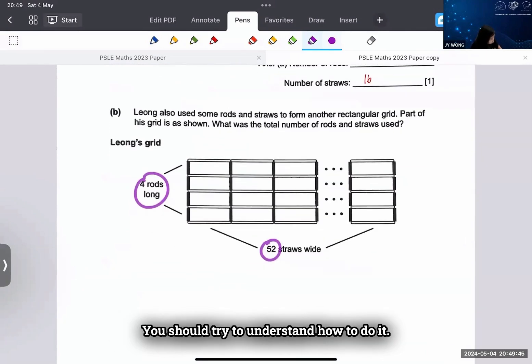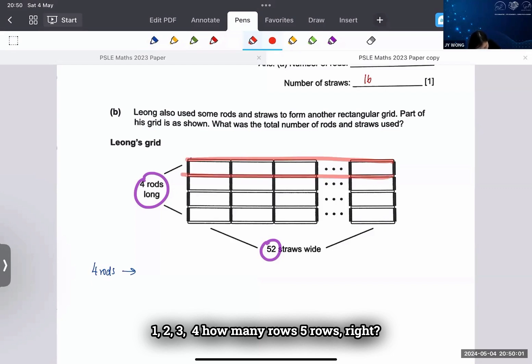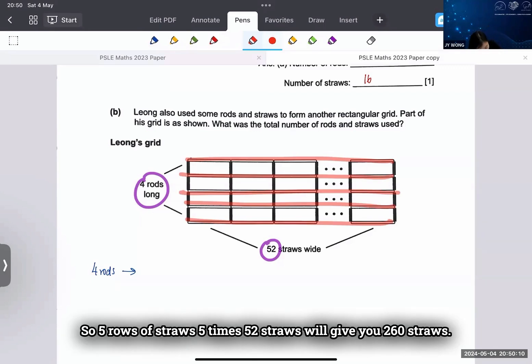Now we talk about the rods first. If I have 4 rods, right, how many rows do you see? One, two, three, four - how many rows? Five rows, right? So 5 rows of straws.